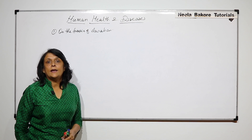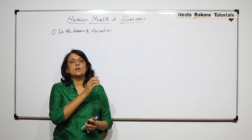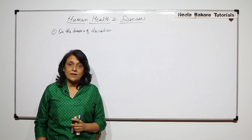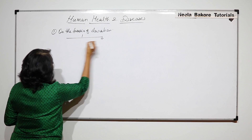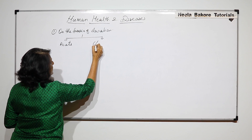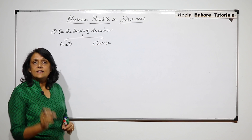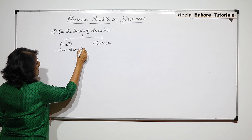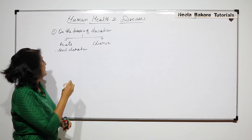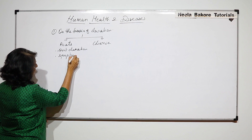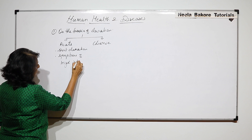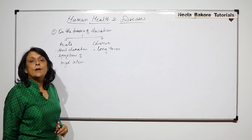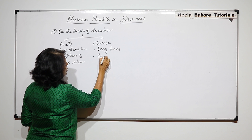Certain diseases are long-term diseases, meaning the duration is very long and the intensity of the symptoms is slow — slowly and gradually those symptoms would aggravate. Here we have two terms: acute disease and chronic disease. Acute diseases are short-duration diseases but the symptoms are of high intensity, while chronic diseases have symptoms of low intensity.